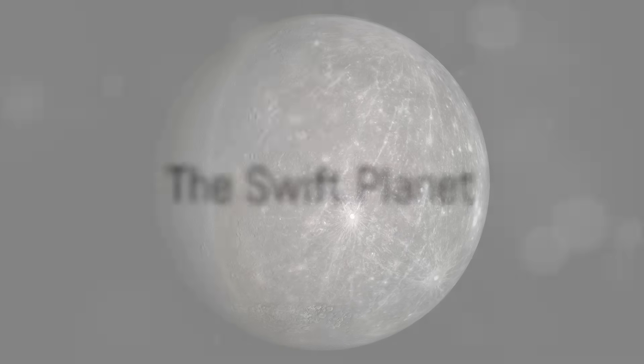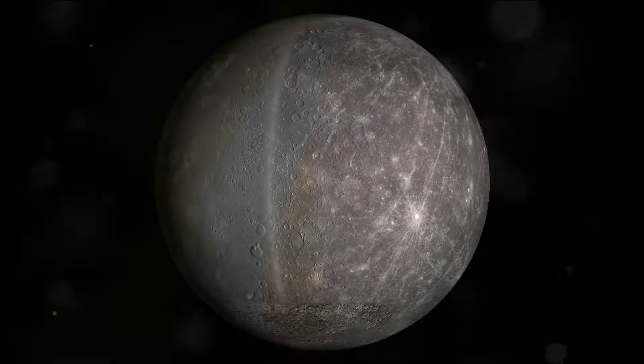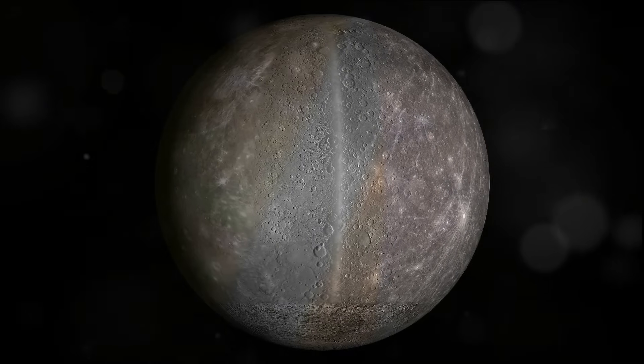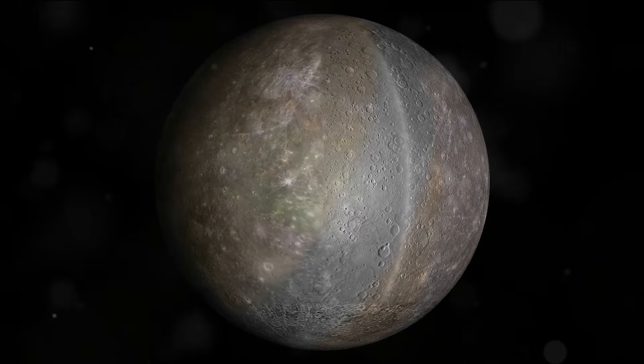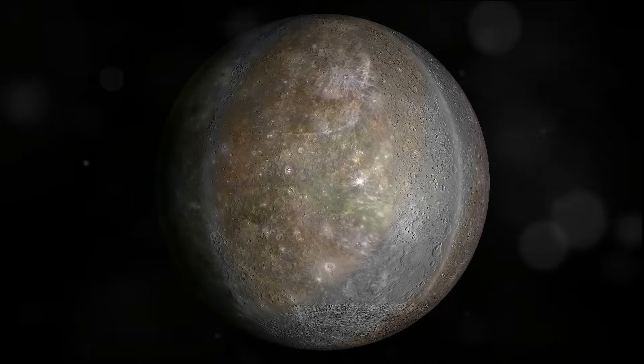Now let's dive into the fascinating world of each planet, starting with the one closest to the sun. Meet Mercury, the smallest planet in our solar system and the closest to the sun. Mercury, just over 3,000 miles in diameter, is a tiny celestial body, yet it's packed with unique features that make it stand out.